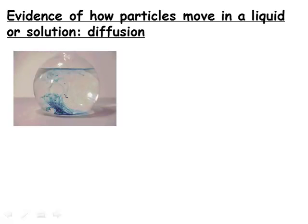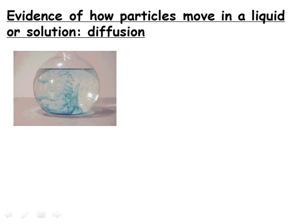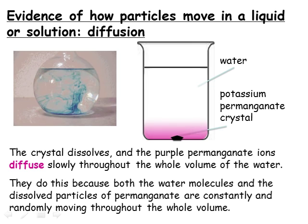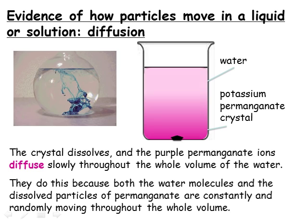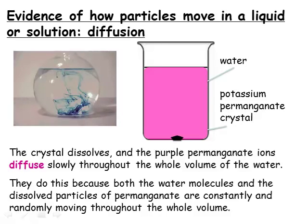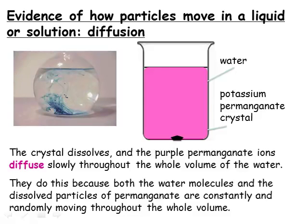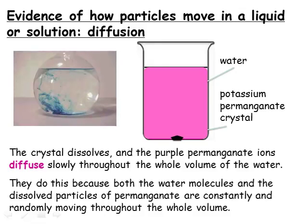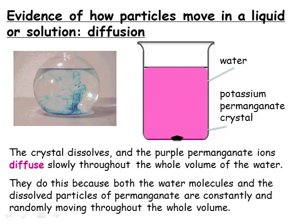It's good to have models that explain how the particles behave, but to be useful, models need evidence that they are correct. Evidence that the particles in a liquid are able to move freely comes from diffusion experiments. If a crystal of potassium permanganate is placed in a beaker of water, it slowly dissolves, and the purple manganate ions mix with the water to form a solution. The water around the crystal turns purple, and because the permanganate ions in the solution are free to move, the purple colour progressively spreads through the solution until a uniform purple colour is seen. The same effect can be seen if a drop of ink is added to water.